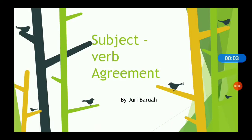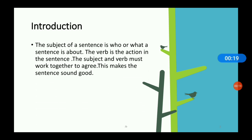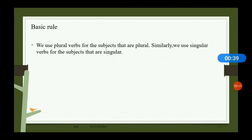Today I'm going to discuss subject-verb agreement. The subject of a sentence is who or what the sentence is about. The verb is the action in the sentence. The subject and the verb should always be in agreement — then only it will make the sentence sound good. The basic rule: we use plural verbs for subjects that are plural, and singular verbs for subjects that are singular.